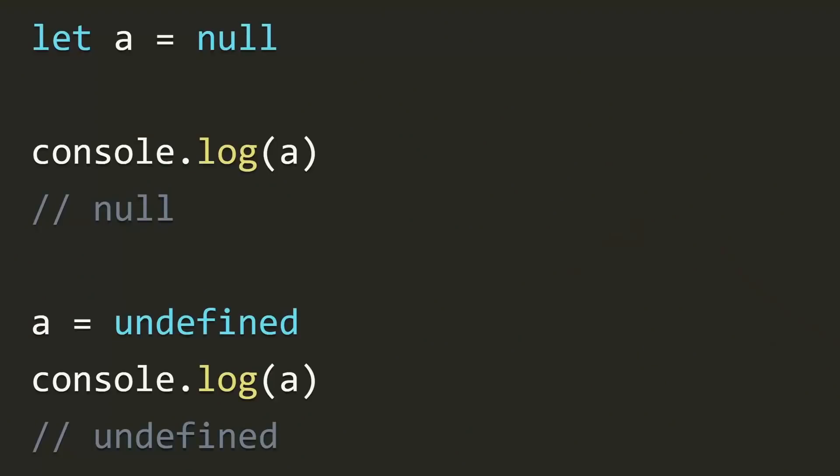One thing that trips up a lot of people is that you can actually set a variable's value to either null or undefined. When I mentioned earlier that undefined means something hasn't been defined yet — if you set a variable to the value of undefined, you're explicitly saying it's undefined, so it's a bit confusing. Really the only time I would set a variable to undefined is if you want to reset that variable for some reason.